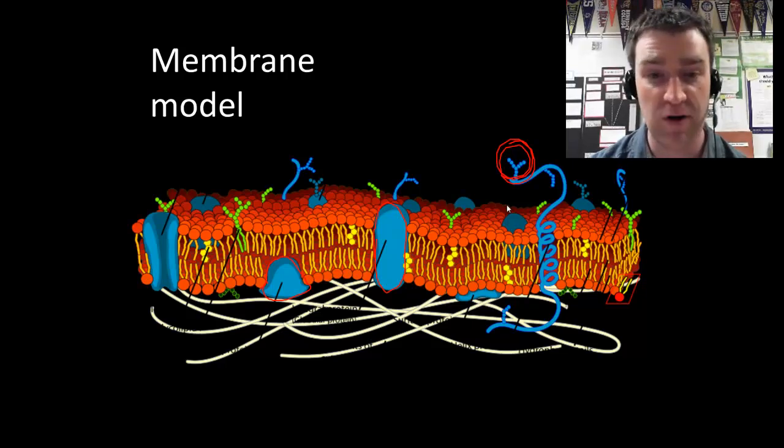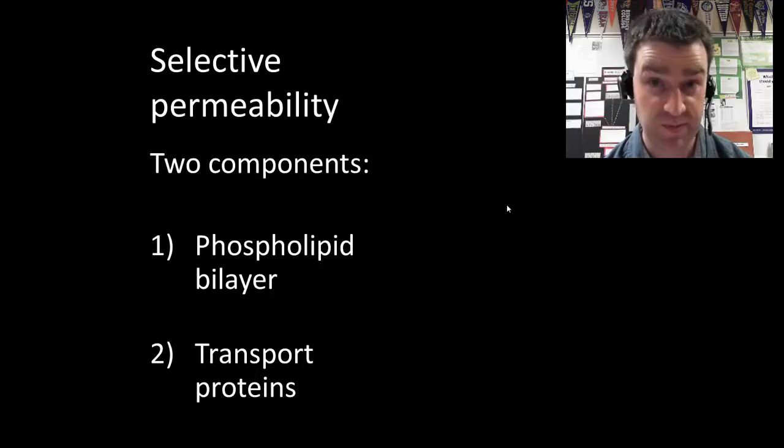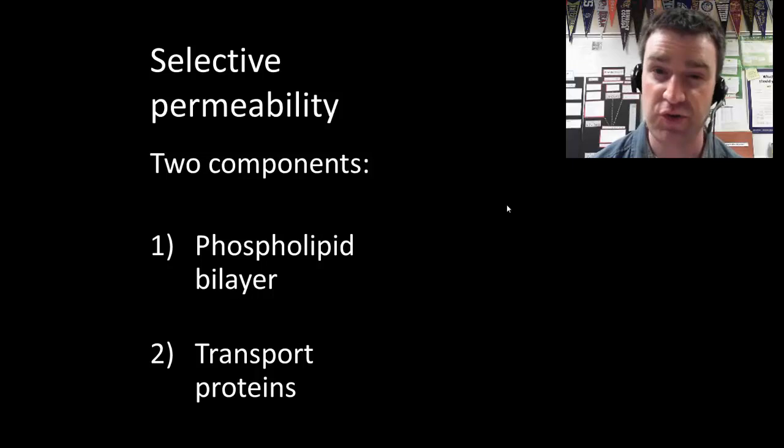For our discussion of selective permeability, I want to talk in particular about the phospholipid bilayer and transport proteins. I would want you to be able to walk me through how both of their structures contribute overall to selective permeability. The phospholipid bilayer is effectively the blocker of many types of particles, and transport proteins can be very selective about which particles actually cross through them.